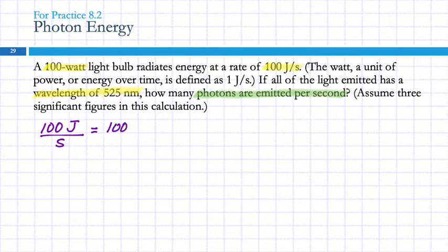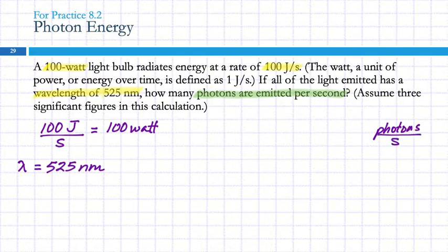We'll start by writing some of these things down. We have 100 joules per second, which is the same as 100 watts. And then we have 525 nanometers, and that would be the wavelength. So we're trying to find photons per second. This is joules per second, this is energy per second. And this is lambda. This is kind of a challenging one because this is different than anything we've seen before. How much energy does one photon have? Could we calculate that? Yeah, we could.